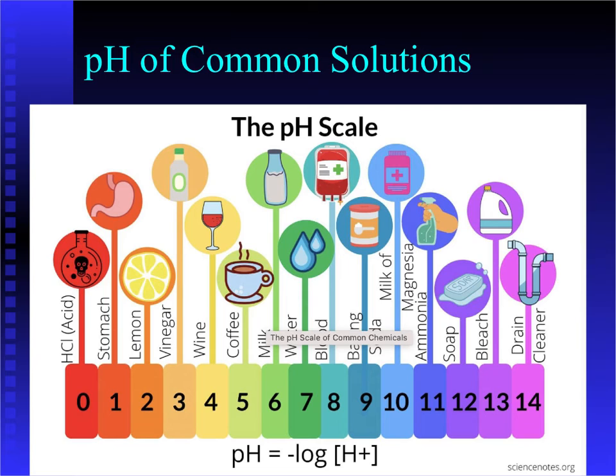So here again, you can see our pH scale. Remember, things below 7 are acids. Things above 7 are bases. Sometimes bases are also called alkaline. So if you see that word alkaline, it just means basic.